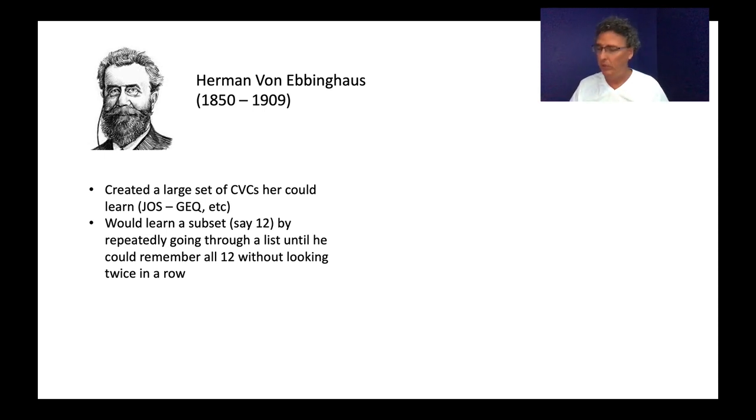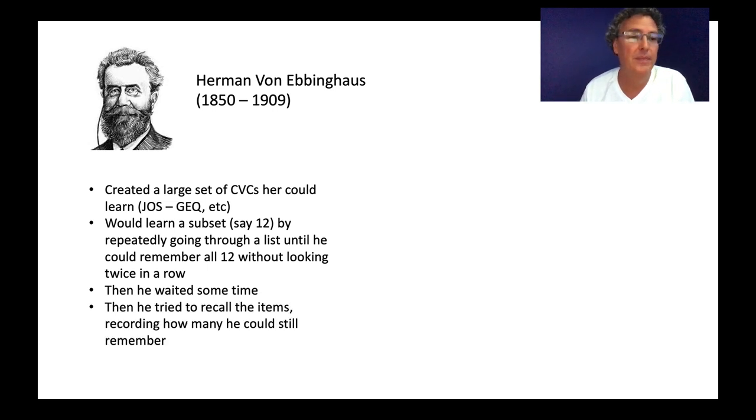He created a whole bunch of them. He would take a set, say 12, pull 12 randomly from the set he created, and then he would repeatedly go through those 12 trying to remember them all. Then you'd write them down if you could remember all 12. If you didn't get them all right, he would go through them all again. When he did get it right, he did it again until he could write them all down, so he wrote them all down, flipped them over, wrote them all down again. If he could do that twice without looking, he said okay, they are now in my mind, I know these 12. Then he waited, let some time pass.